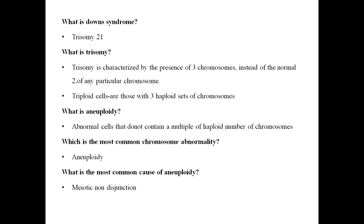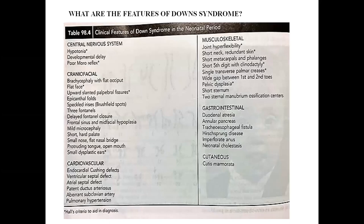The diagnosis should include the syndrome, associated problems, and developmental delay. Discussion: Down syndrome is trisomy 21. Know the difference — trisomy is presence of three chromosomes instead of normal two for a particular chromosome. Triploidy is three haploid sets of chromosomes. Aneuploidy is abnormal cells not containing a multiple of the haploid number. The most common chromosomal abnormality is aneuploidy; the most common cause of aneuploidy is meiotic non-disjunction, which also applies to Down syndrome.